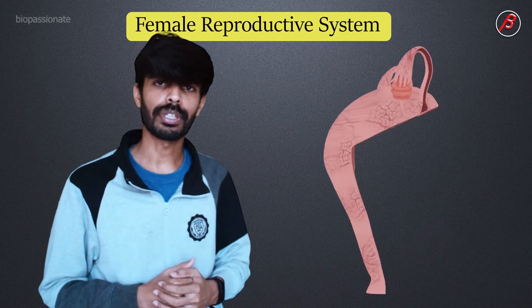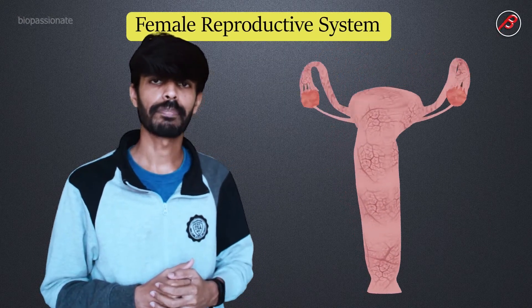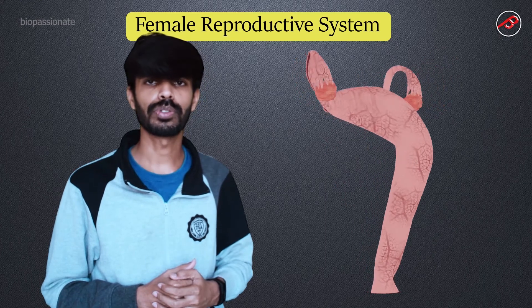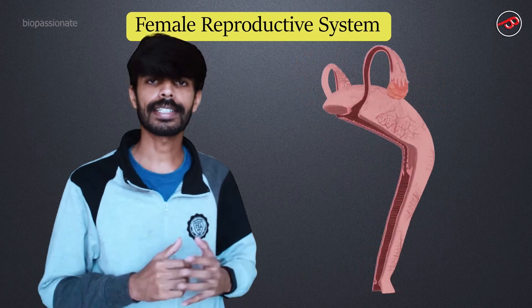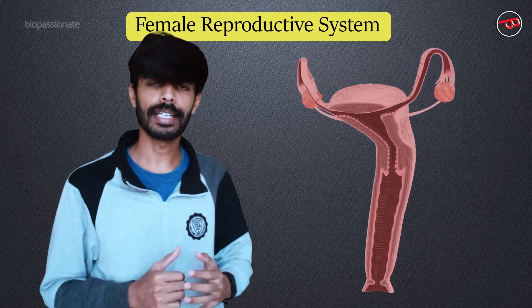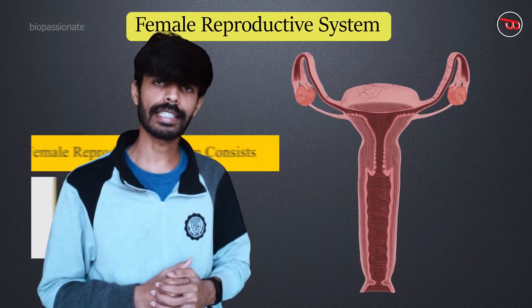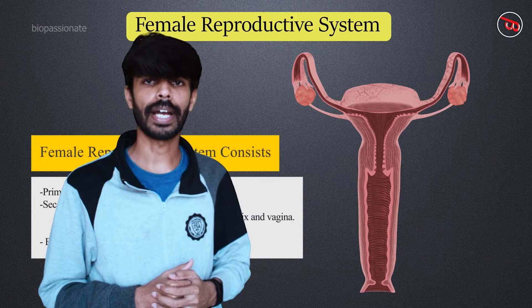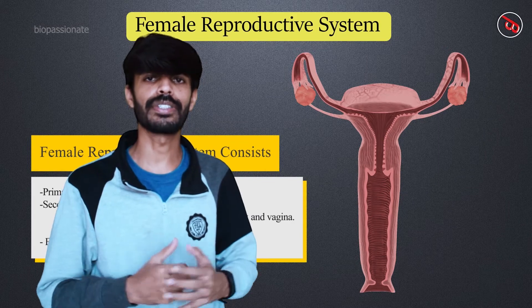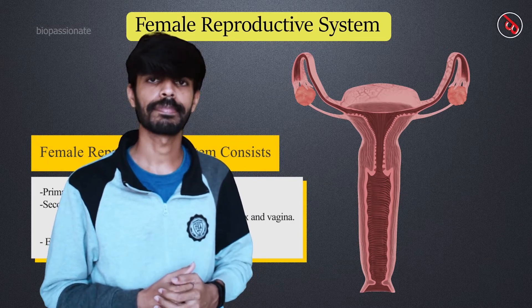The female reproductive system in humans consists of primary sex organs, secondary sex organs, accessory ducts and glands, and external genitalia.